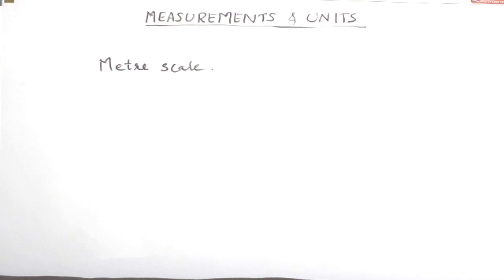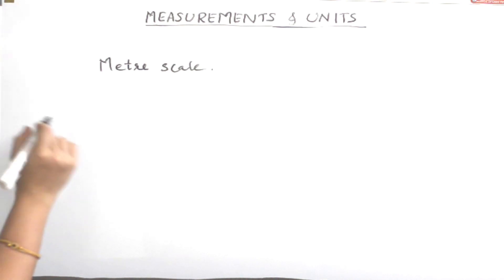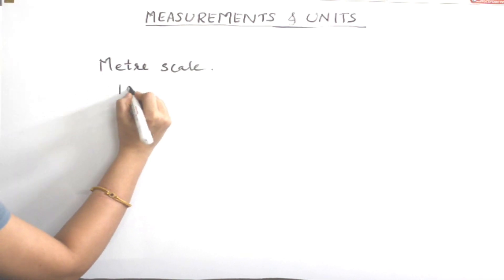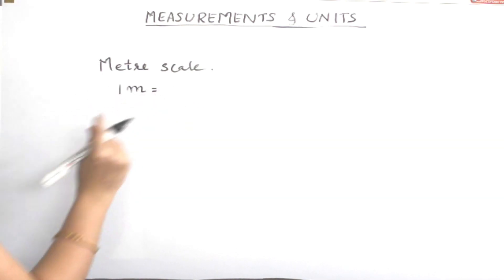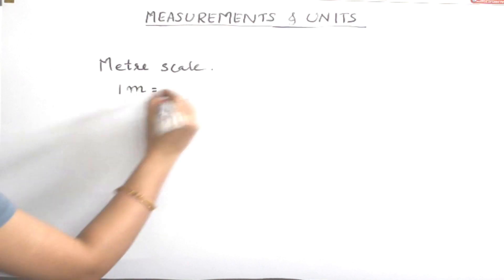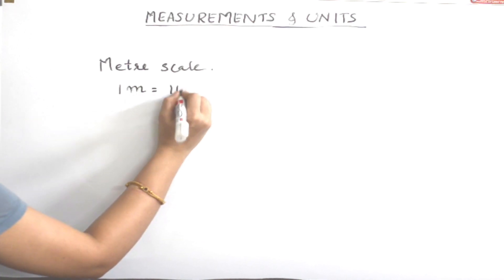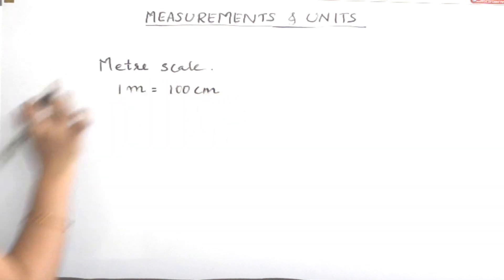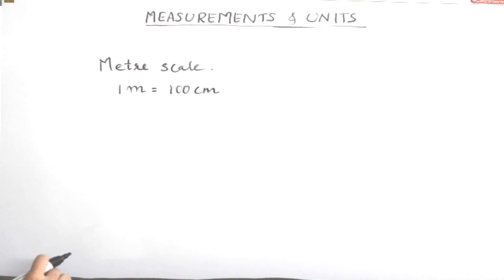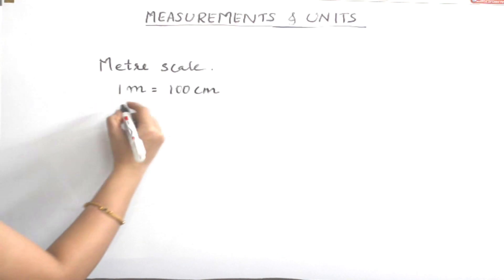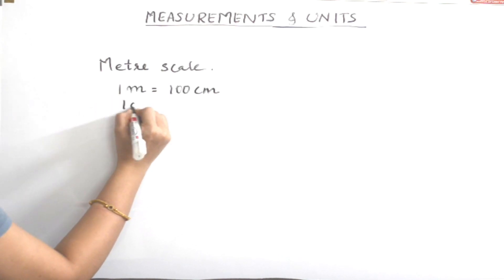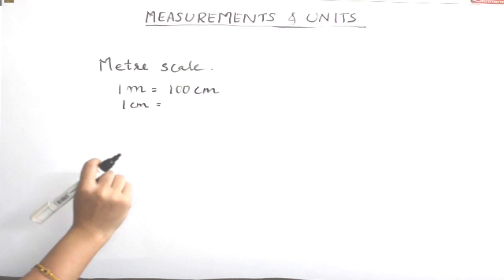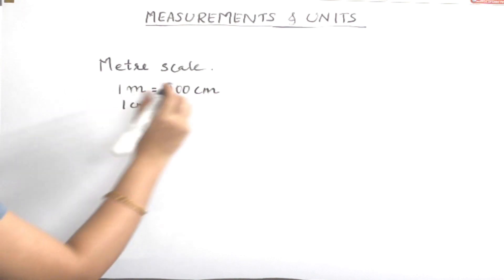Let's look at the meter scale. A meter scale is 1 meter, which means 100 centimeters. One centimeter means 10 millimeters.